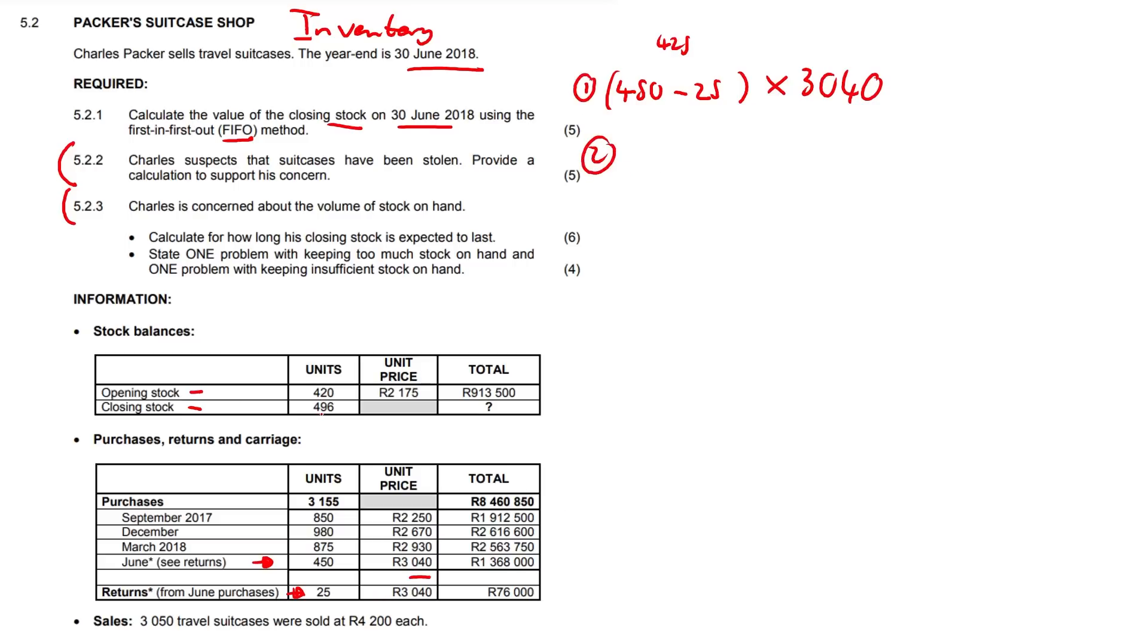The second part of our calculation, we look at our closing stock amount, so that's going to be the 496, and we subtract our 425 from the 496. The order is very important. We're going to multiply that amount by 2930. Whatever was bought first must be sold first. So these units that cost 3040, that's already been sold. It's done now, it's finished.